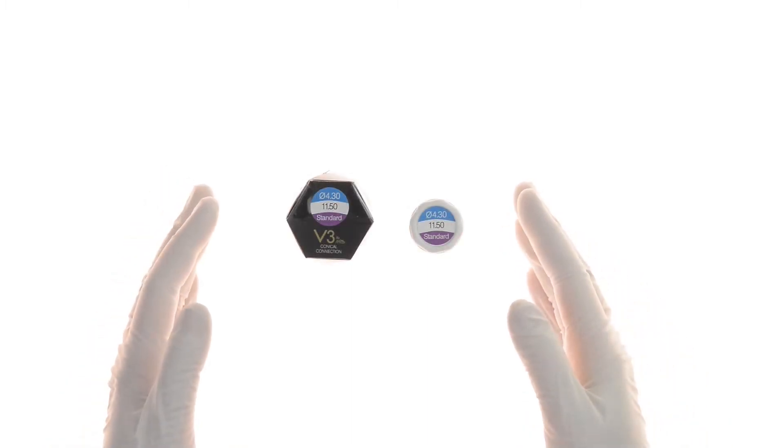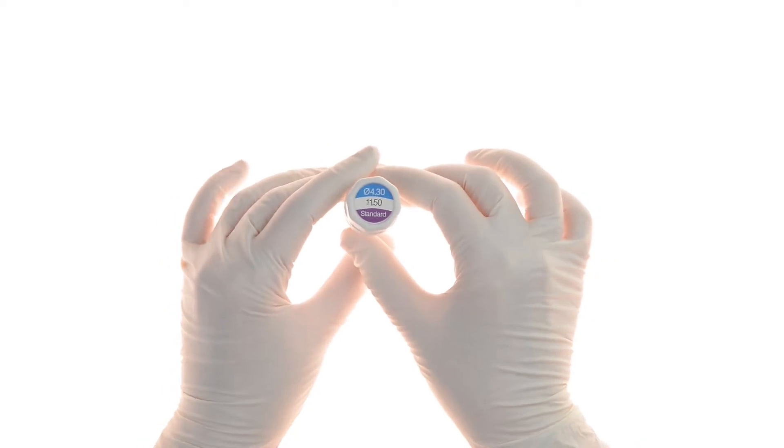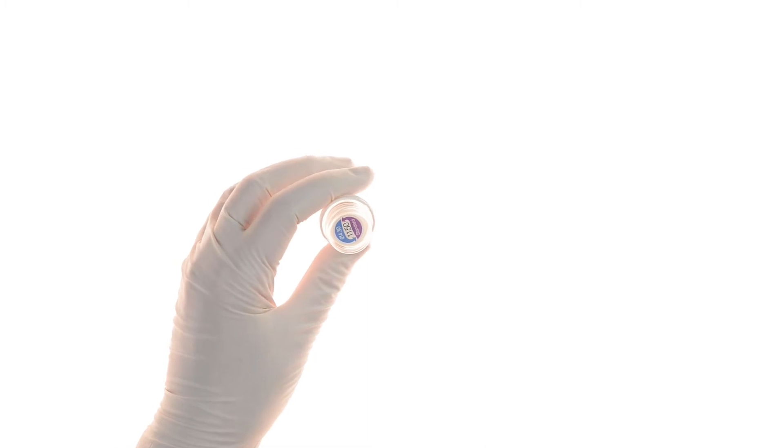This is the V3 implant by MIS. Today we will place a 4.3 diameter V3 implant using the comprehensive V3 surgical kit in a premolar site for tooth 44.